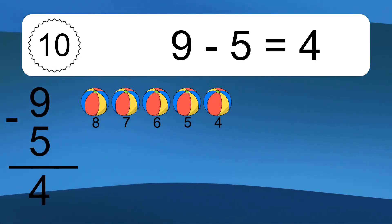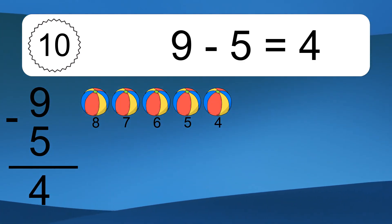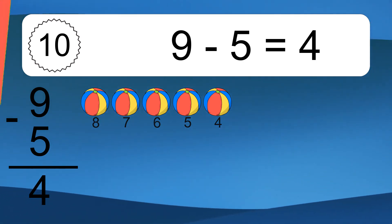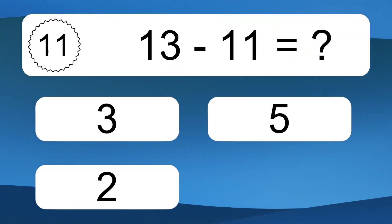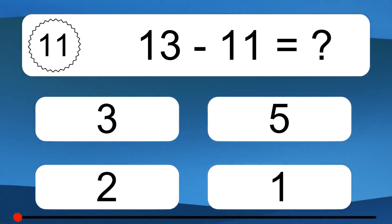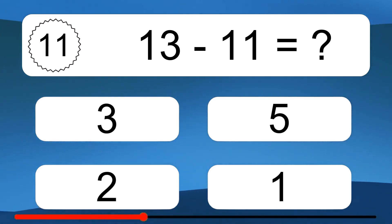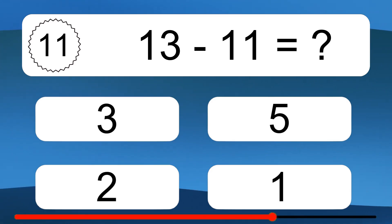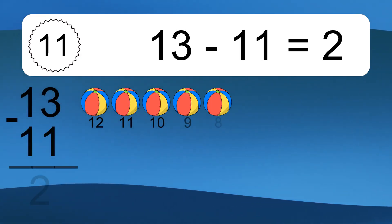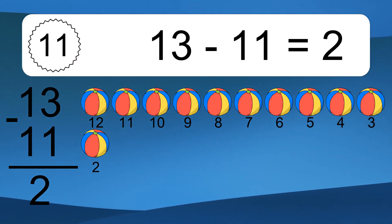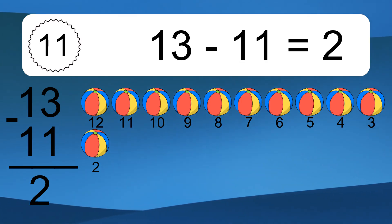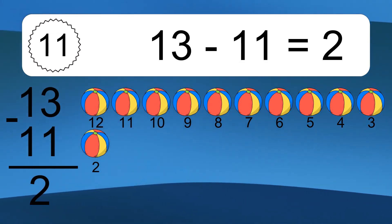9 minus 5 equals 4. Let's count it: 8, 7, 6, 5, 4. 13 minus 11 equals what? 13 minus 11 equals 2. Let's count it: 12, 11, 10, 9, 8, 7, 6, 5, 4, 3, 2.